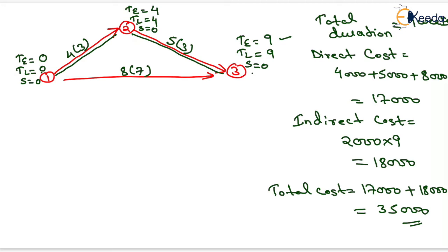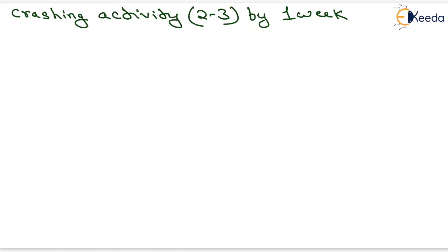The cost slope of activity 2–3 is the minimum at 1000 rupees. We could crash activity 2–3 by up to 2 weeks since its crashing potential is 5 minus 3 equals 2. However, crashing it by 2 weeks would change the critical path from 1–2–3 to 1–3, which we want to avoid. Therefore, we will crash activity 2–3 by only 1 week.